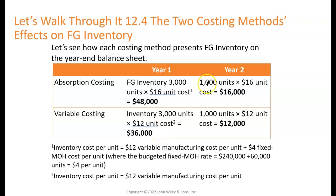Under variable costing it's lower. In year two, we have 1,000 units left. Those 1,000 units at $16 per unit are worth $16,000 under absorption costing. Under variable costing, those 1,000 units at $12 per unit are worth $12,000.